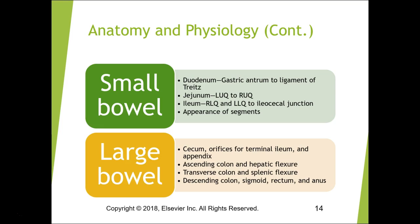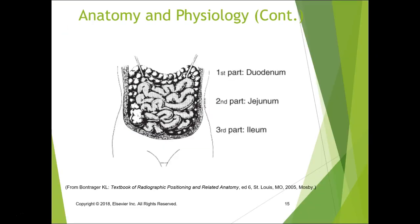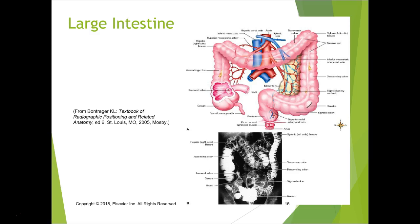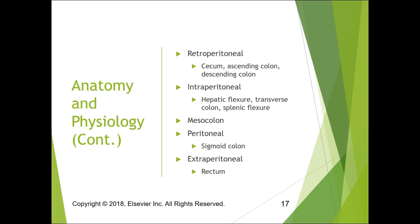The ascending colon has the hepatic flexure, the transverse colon has the splenic flexure, then descending colon, sigmoid, rectum, and anus. Retroperitoneal structures include the cecum, ascending colon, and descending colon. Intraperitoneal includes the hepatic flexure, transverse colon, and splenic flexure. The sigmoid is peritoneal and the rectum is extraperitoneal.